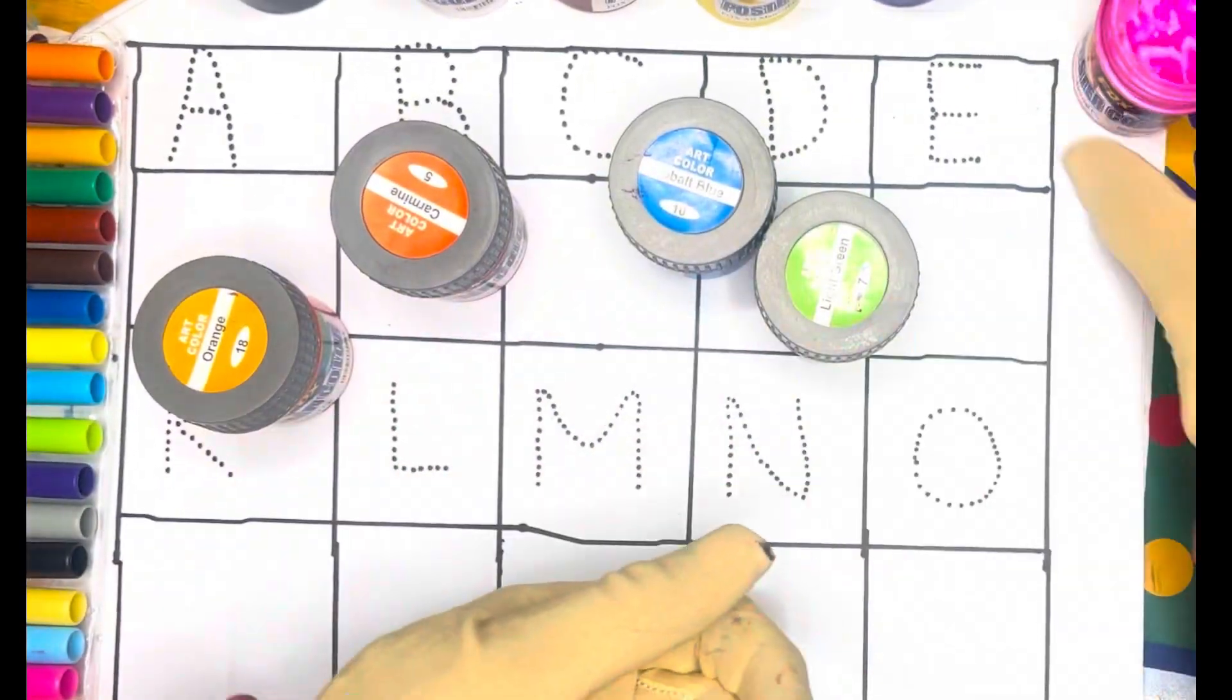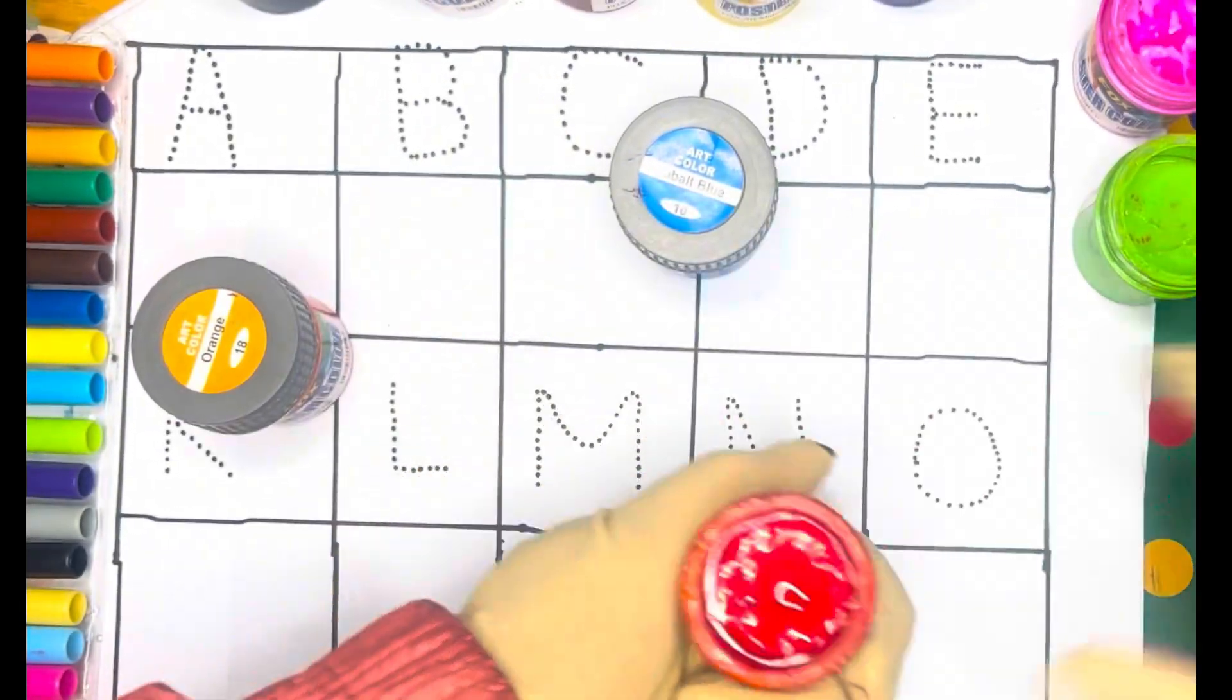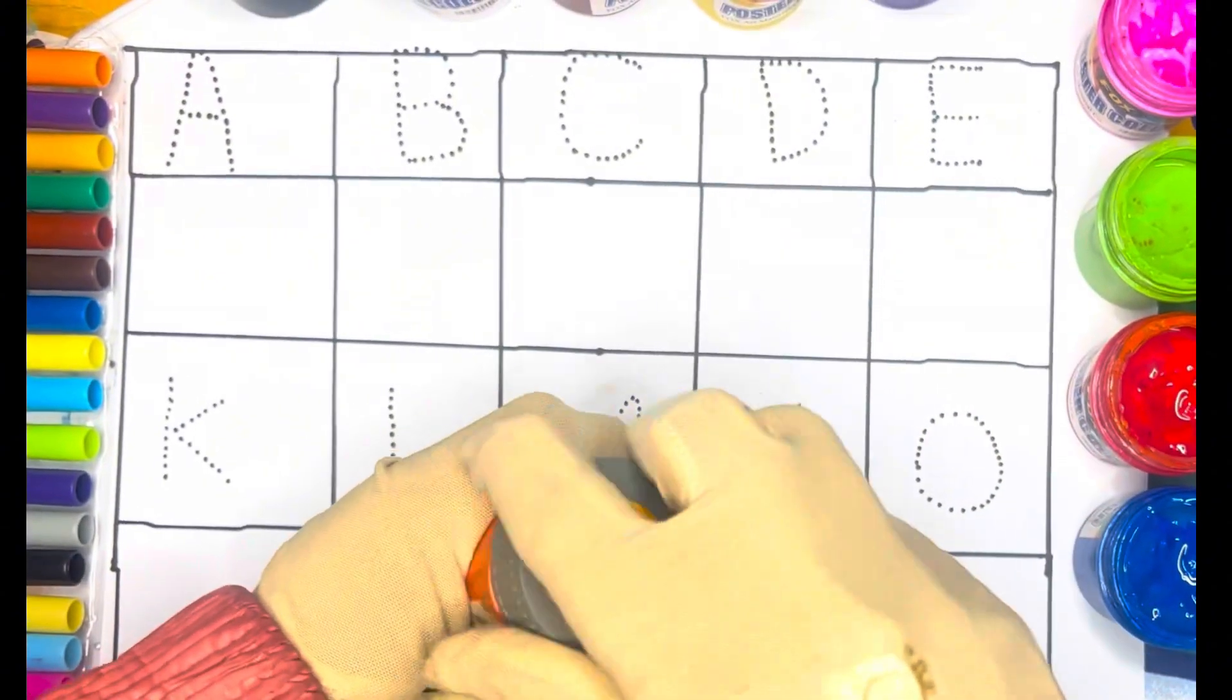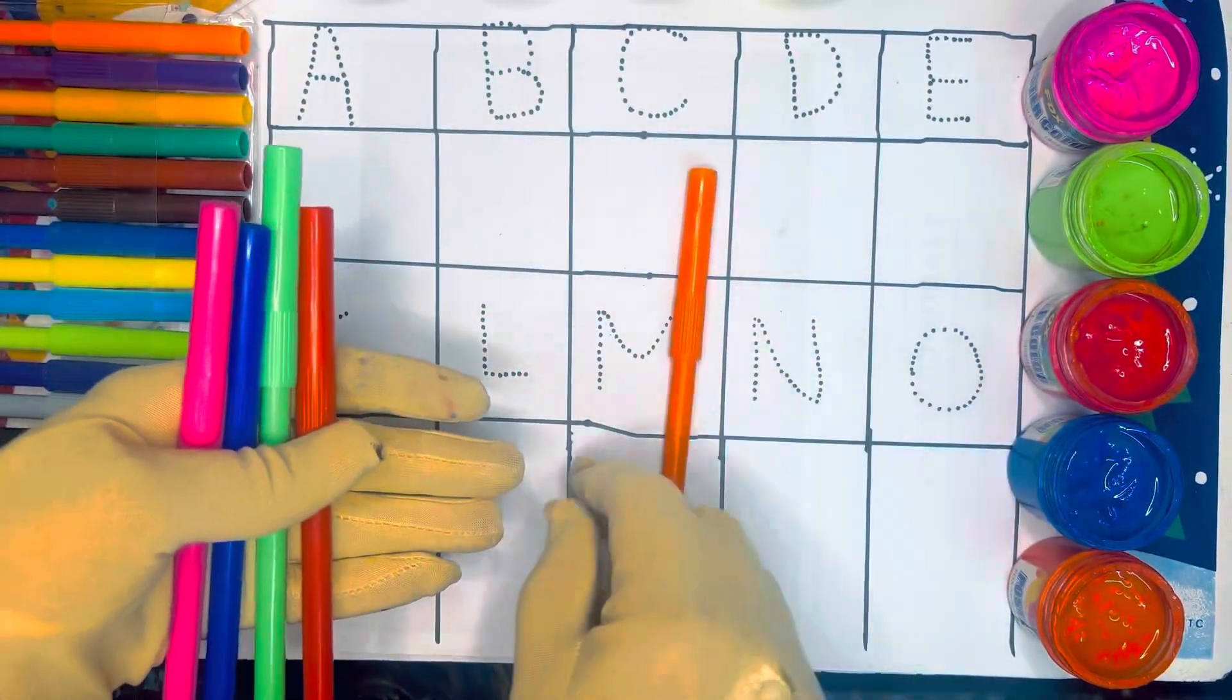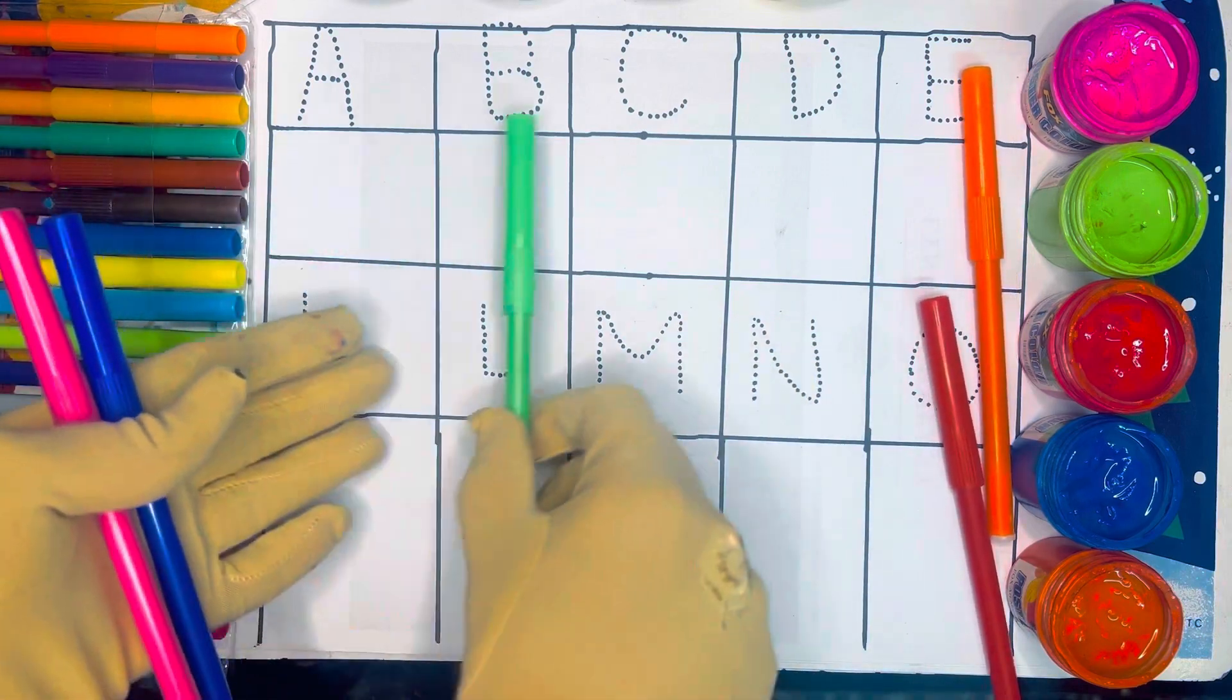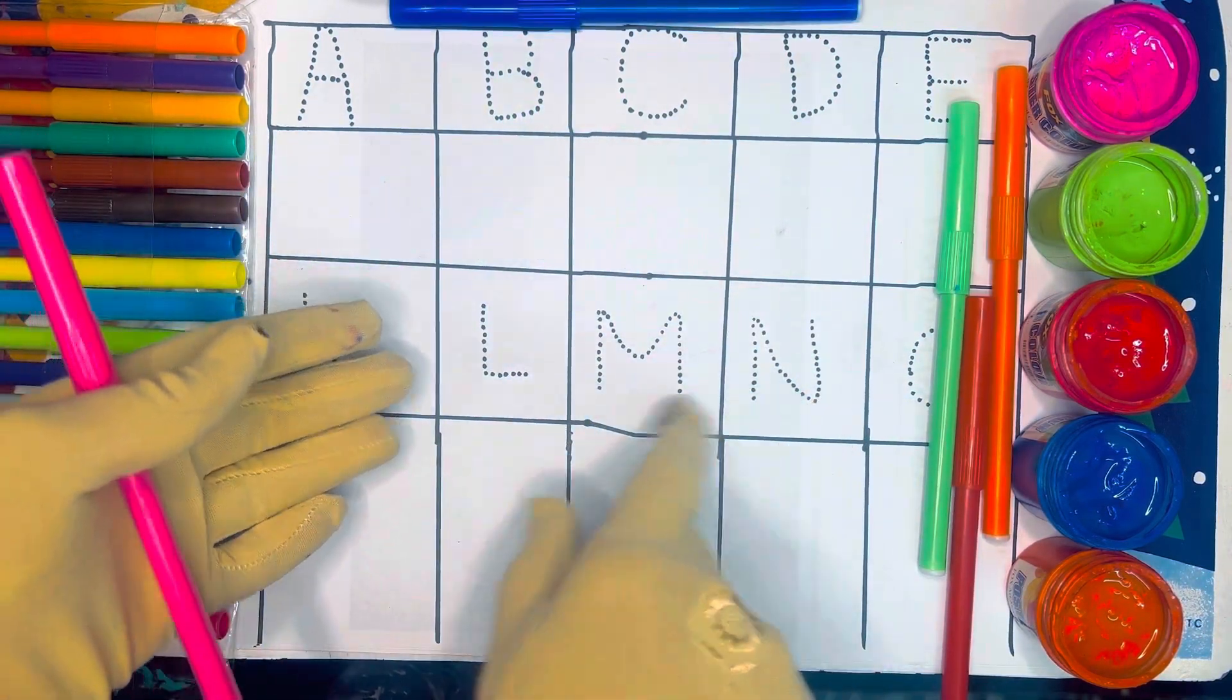Let's start with pink color, green color, red color, blue color, and last, orange color. Okay, again, colors name: orange, red, green, blue, and last, pink.